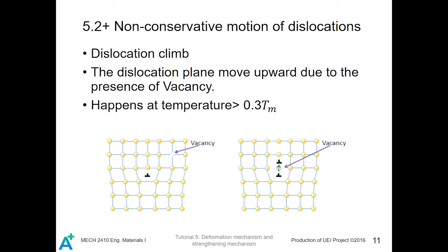Apart from dislocation slip, which is a conservative motion, there are also non-conservative motions of dislocations. One case is dislocation climb, where the dislocation plane moves outward due to the presence of a vacancy. As shown in the first figure, there is a vacancy, and the dislocation can move outward because of it. This usually happens at temperatures higher than 0.3 times the melting point of the particular material.